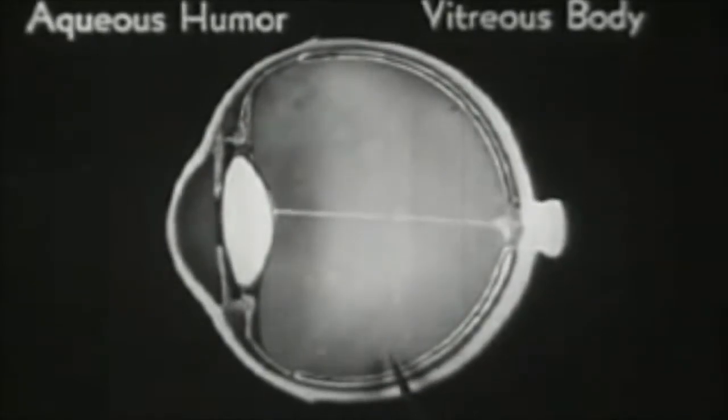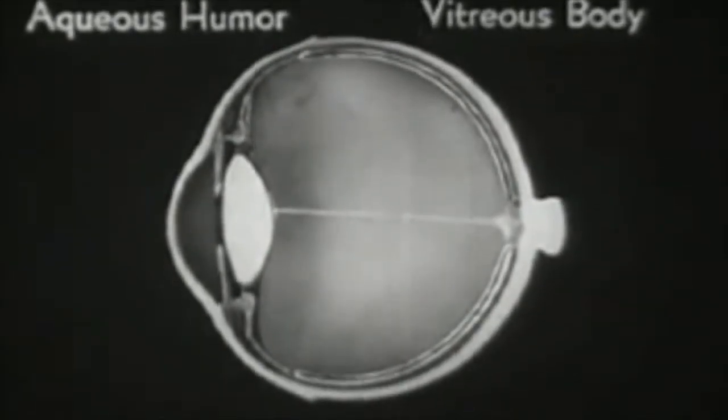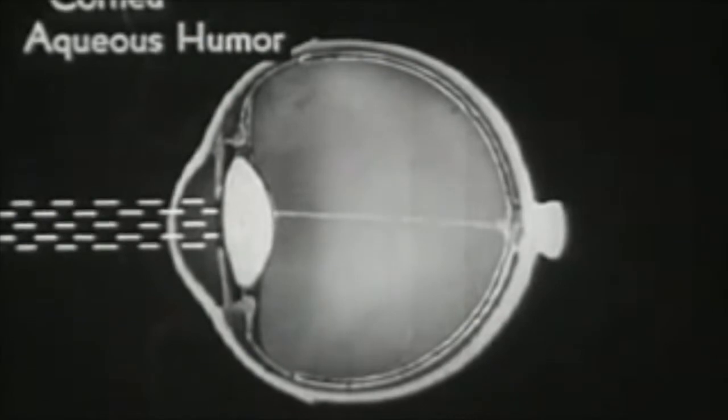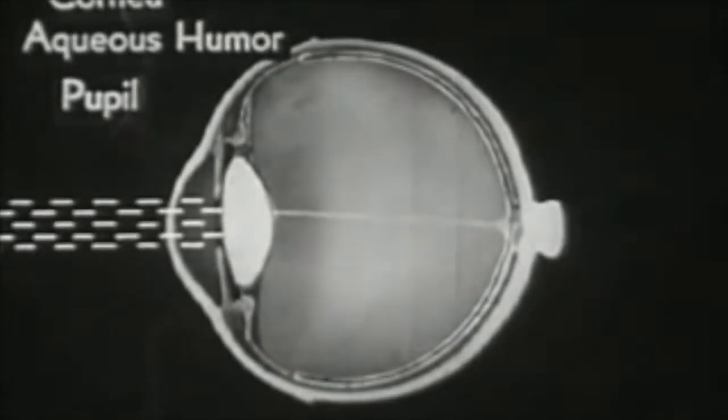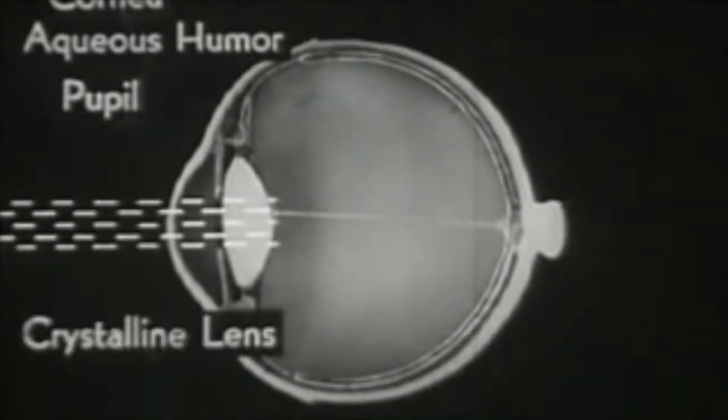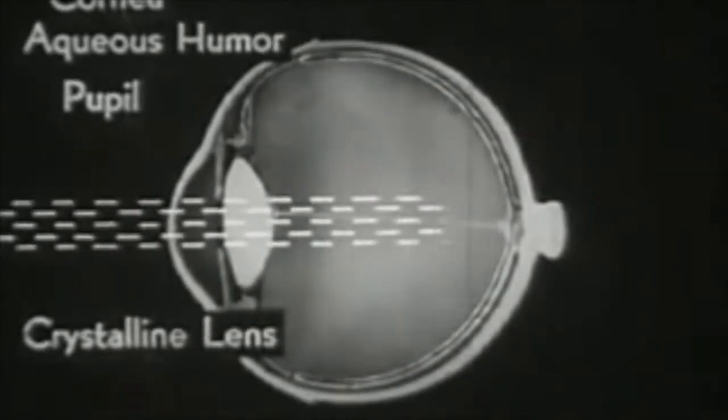Thus, light rays entering the eye must pass in succession through first the cornea, second the aqueous humor, third the pupil, fourth the crystalline lens, and fifth the vitreous humor, in order to reach their destination, the retina.